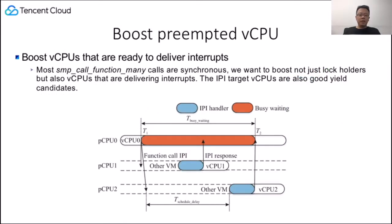Next, I will introduce the mechanism to boost preempted vCPUs. To mitigate the lock holder preemption issue, a vCPU which spins is detected by hardware, and while in the host, the vCPU yields time to the lock holder candidate vCPU selected by a heuristic algorithm. Now we want to boost not just lock holders but also vCPUs that are delivering interrupts. Most SMP call function many calls are synchronous, so the IPI target vCPUs are also good yield candidates. We boost vCPUs during wake-up and interrupt delivery time.